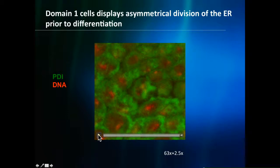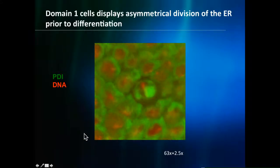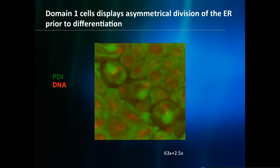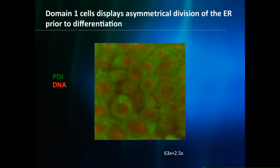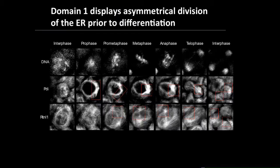You can watch the movie and see that one daughter cell is getting more ER than the other. This is in domain one, in that little patch of cells. Not all cells in domain one show this — about 17% of the cells display an asymmetric partitioning of the ER. We checked a couple of markers: PDI (protein disulfide isomerase), found in the lumen, and reticulon-1, found on the surface. We see this unequal partitioning in both markers.